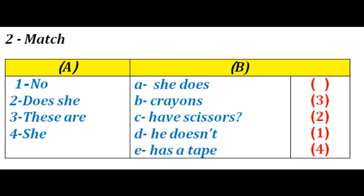Number one: No. No, he doesn't. Very good, letter D. I'll write number one. Number two: Does he have scissors? Have scissors, letter C. I'll write number two.